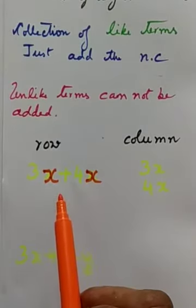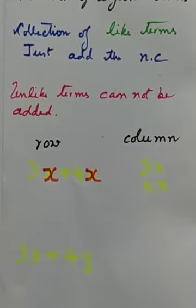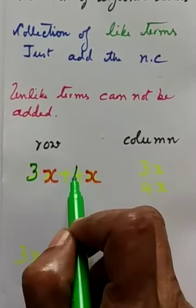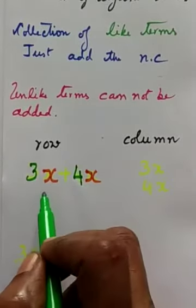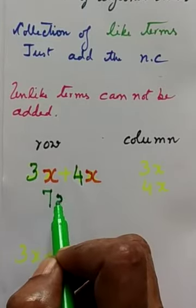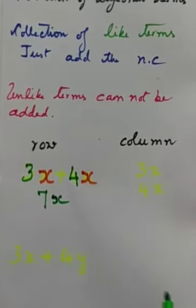So you just add the numerical coefficients 3 and 4. 3 plus 4 how much? 7. Then just write x here.